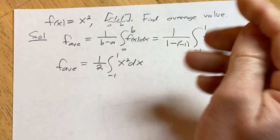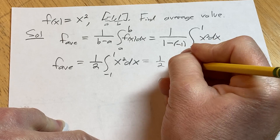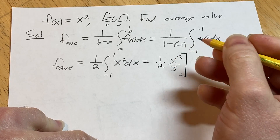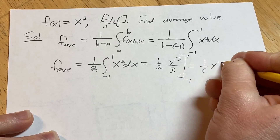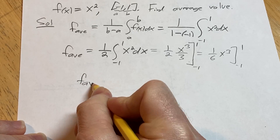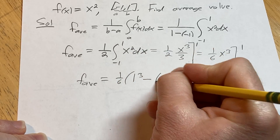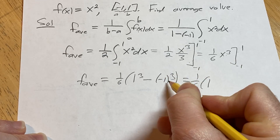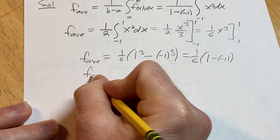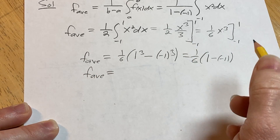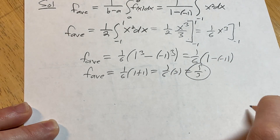Using the power rule — add 1 to the exponent and divide — this becomes 1/2 times [x³/3] evaluated from negative one to one, which simplifies to (1/6)x³ from negative one to one. Plugging in: (1/6)(1³) minus (1/6)(negative 1)³ = (1/6)(1) minus (1/6)(negative 1) = (1/6)(1 minus negative 1) = (1/6)(2) = 1/3. So the average value over [negative 1, 1] is 1/3.